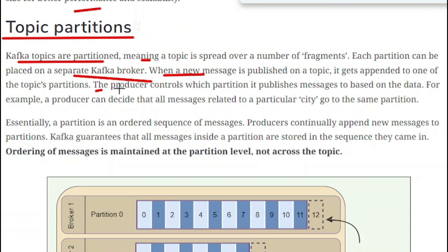The producer controls which partition it publishes the message to, based on the data. For example, the producer can decide that all the messages related to a particular city go to the same partition. So you can understand it like this: there is one topic used to store the messages of cities, and there can be a number of cities, like 10 or 20 cities.